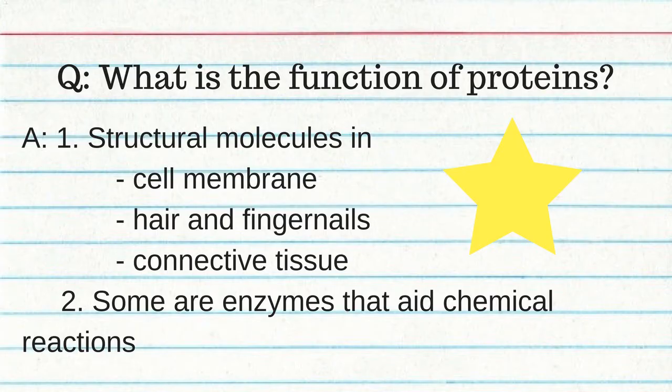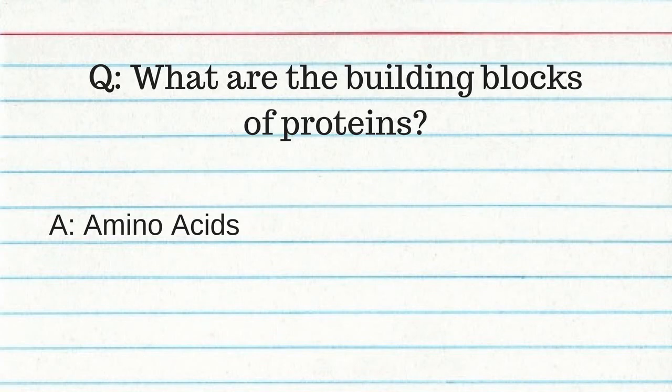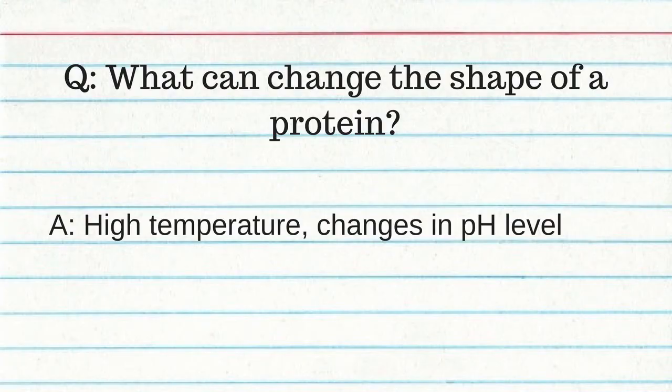What is the function of proteins? They are structural molecules in the cell membrane, hair, finger cells, and connective tissue. Some are enzymes which aid chemical reactions. Proteins are composed of carbon, hydrogen, oxygen, and nitrogen. The building blocks of proteins are amino acids. Protein function depends on their shape. High temperature and changes in pH level can change the shape of a protein. Low temperature will just slow it down but doesn't stop it from working.